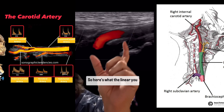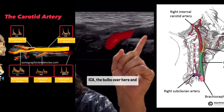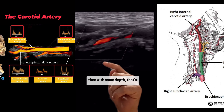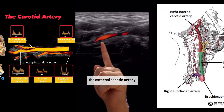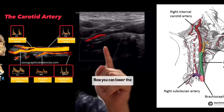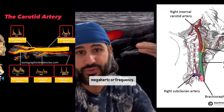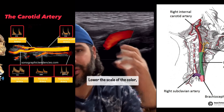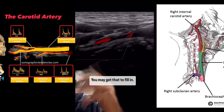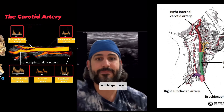With the linear probe, you get this short segment of ICA — the bulb's over here. With some depth, that's the external carotid artery, and you can see there's some more there. You can lower the megahertz or frequency, lower the scale of the color, increase the gain — you may get that to fill in. But sometimes it's very difficult, especially with people with bigger necks.